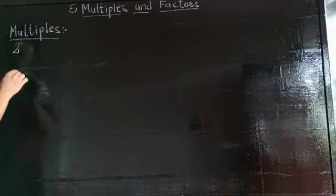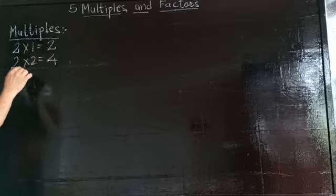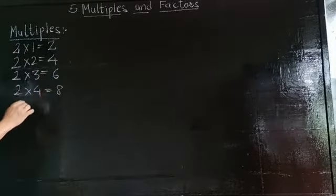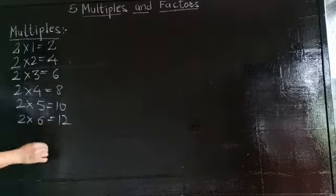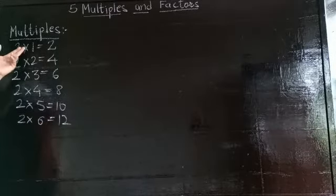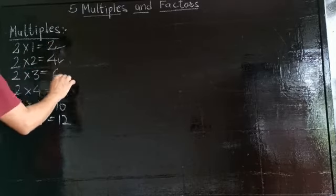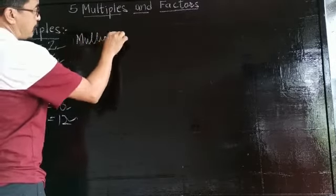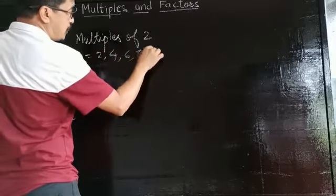Let's take the number 2 as an example. 2 ones are 2, 2 twos are 4, 2 threes are 6, 2 fours are 8, 2 fives are 10, 2 sixes are 12. So 2, 4, 6, 8, 10, 12 - these are the multiples of 2. Multiples of 2 are equal to 2, 4, 6, 8, 10, 12, and so on.